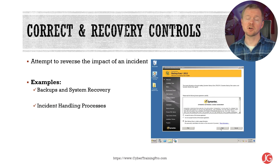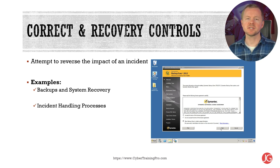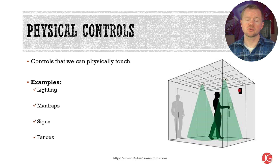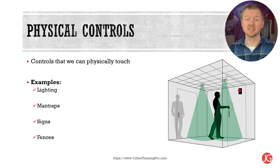Corrective controls attempt to reverse the impact of an incident. Examples include backups and system recovery to revert a system back to a previous point in time, and incident handling processes that define steps to take in response to security incidents. Physical controls are controls we can physically touch — examples include lighting, man traps, signs, and fences.